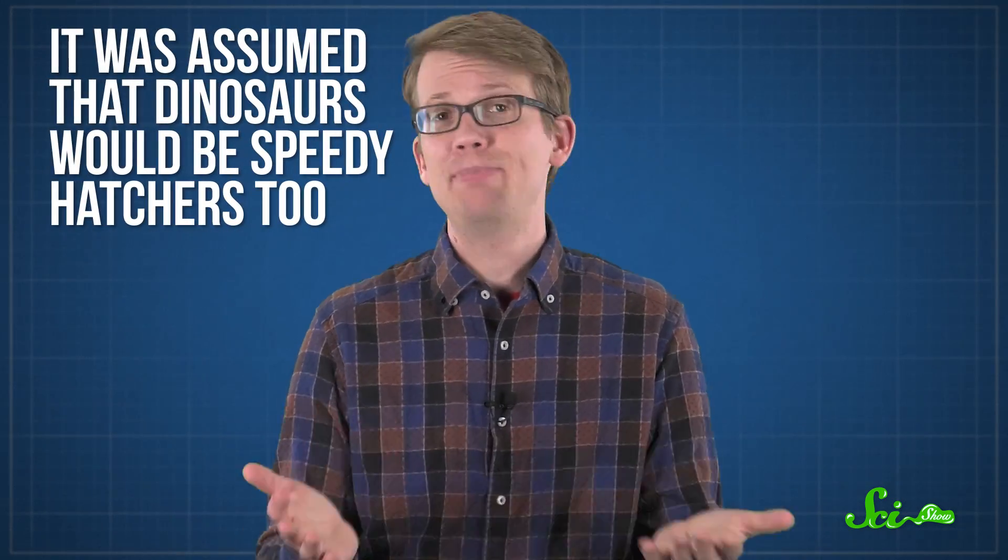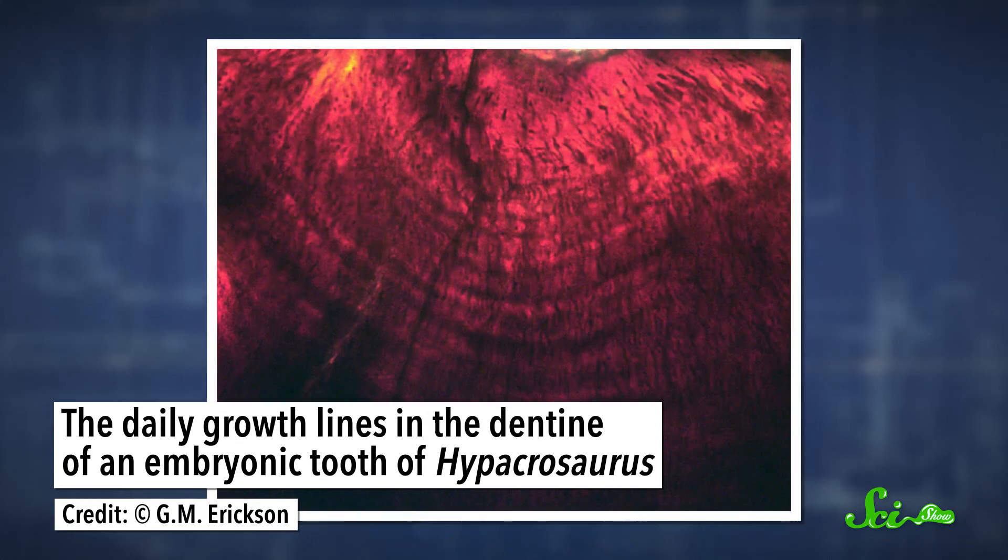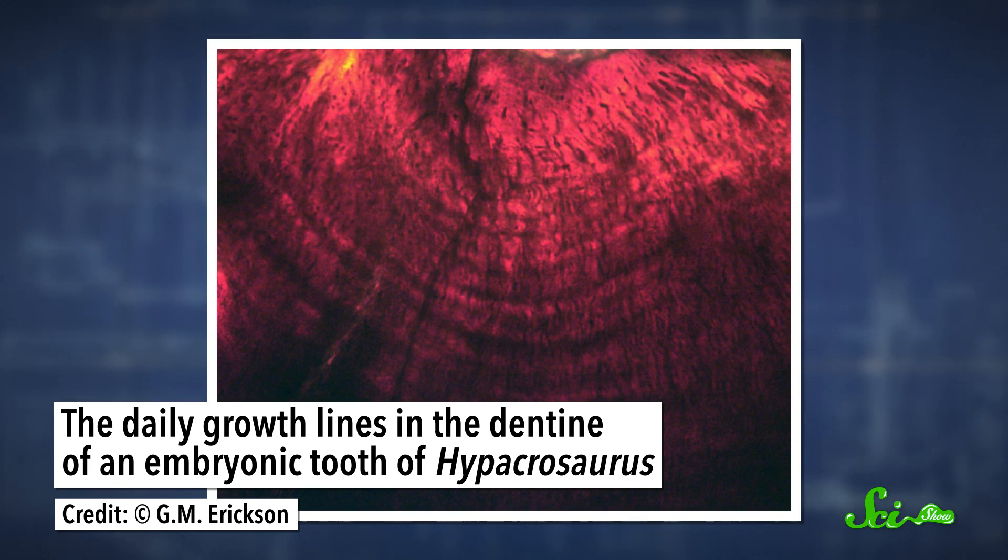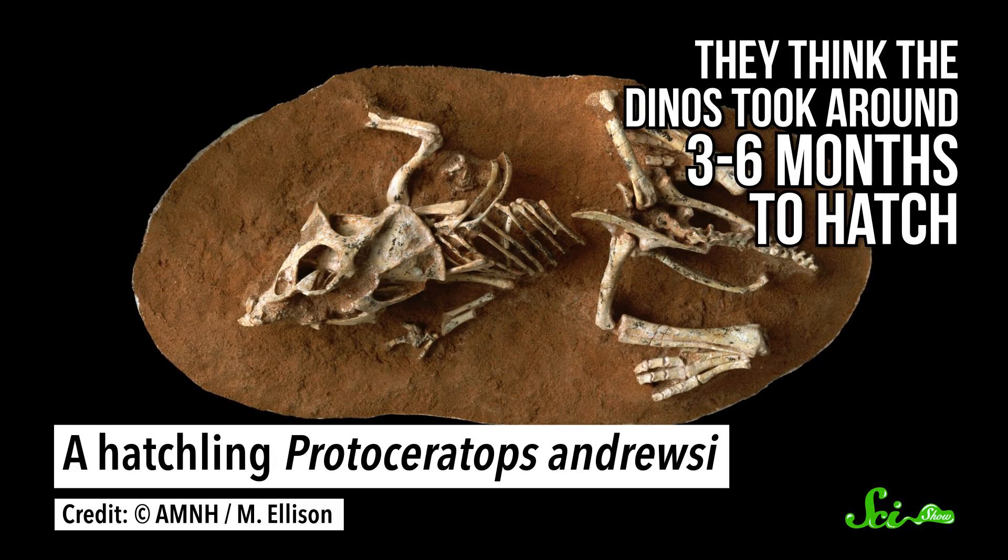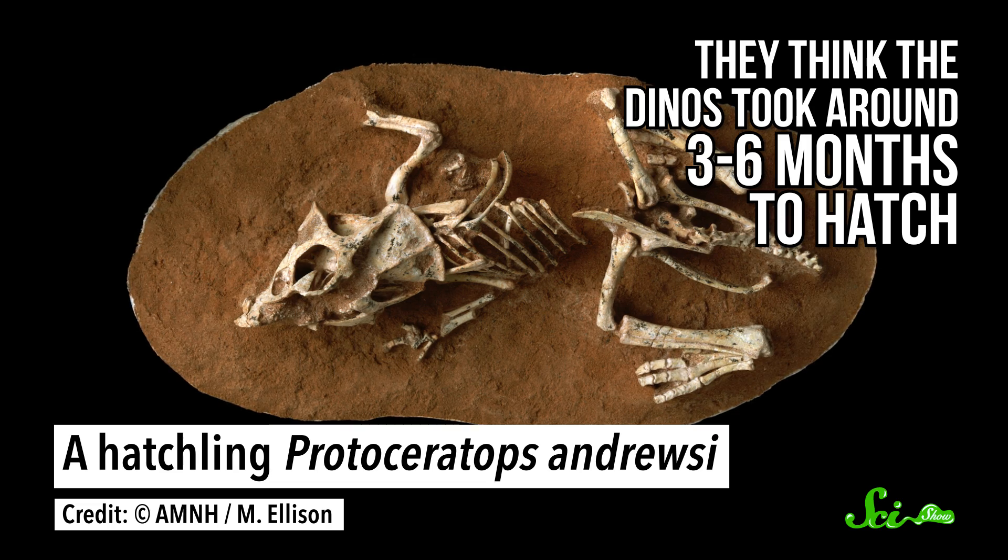As the closest relatives of extinct dinosaurs, it was assumed that dinosaurs would be speedy hatchers, too. But we don't know that much about their development. A 2016 study took another look at some rare embryonic ornithischian dinosaur fossils. By examining daily growth lines in their teeth, researchers could estimate how old they were.